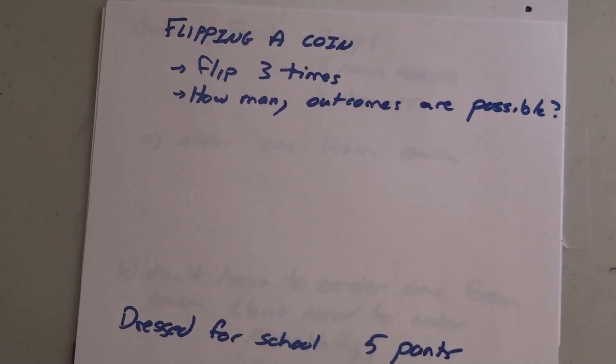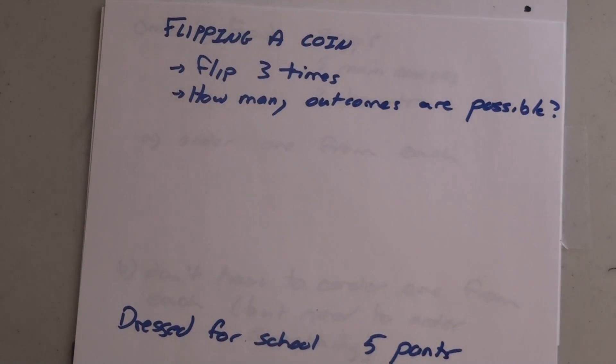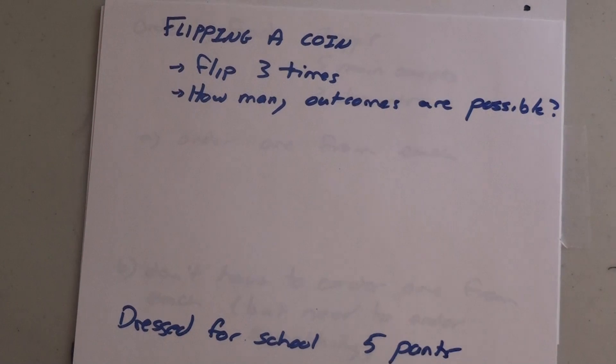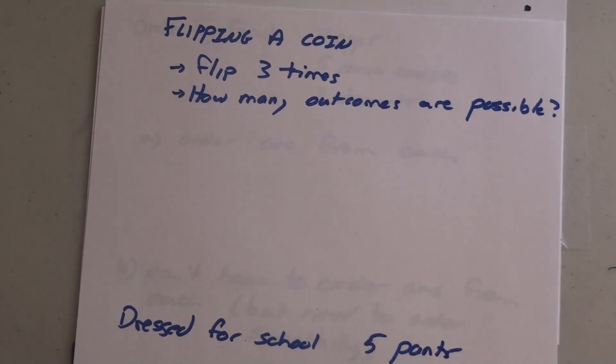This is the second part of the organized counting lesson. The first part we talked about factorials and permutations, kind of a countdown where you're losing options as you went. This time your options are going to stay the same. It'll be a little bit more multiplying.